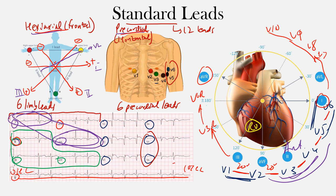Just remember: the standard 12-lead has the hexaxial system in the frontal plane with six limb leads, and the precordial system in the horizontal plane with six precordial chest leads from V1 to V6 going from the right side to the left side of the heart. Well, that's the end of this lecture — I hope you learned something.